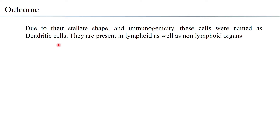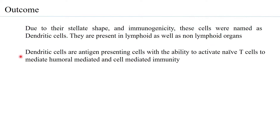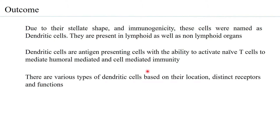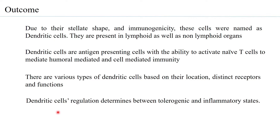The learning outcomes of the session: due to their stellate shape and immunogenicity, these cells were named as dendritic cells. They are present in lymphoid as well as non-lymphoid organs. Dendritic cells are antigen presenting cells with the ability to activate naive T cells to mediate both humoral and cell mediated immunity. There are various types based on distinct receptors and their functions, and their regulation determines between tolerogenic and inflammatory states.